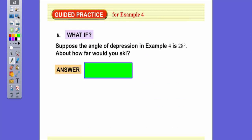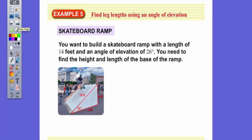So we're going to look at another problem. We're going to look at building a skateboard ramp. So let's say we want to build a skateboard ramp. And we want it to be 14 feet long and an angle of elevation of 26 degrees. The angle of elevation means it goes in here. 14 represents the what? The opposite, the adjacent, or the hypotenuse? The hypotenuse.